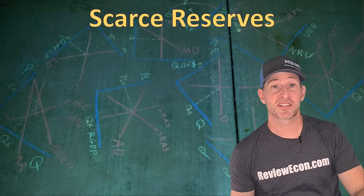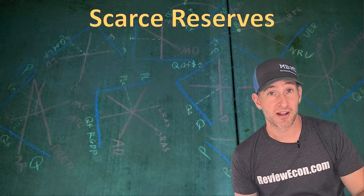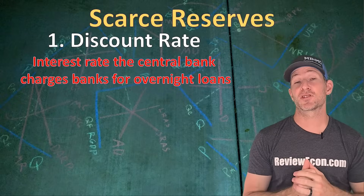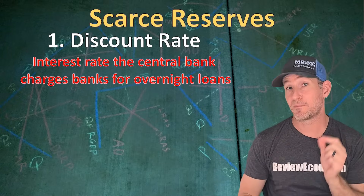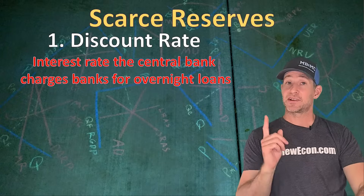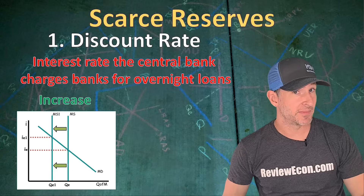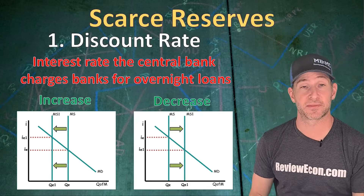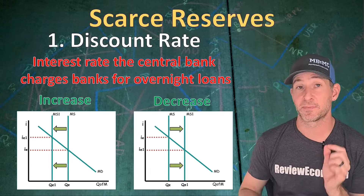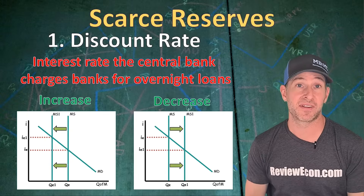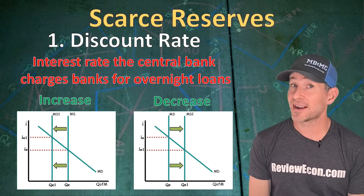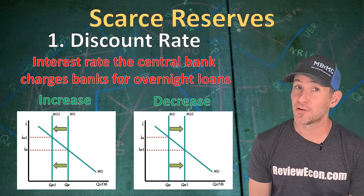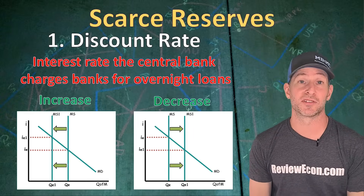Under a scarce reserve system there are three monetary policy tools. The first is the discount rate — the interest rate that the central bank charges banks for overnight loans. Increasing the discount rate decreases the money supply, and decreasing the discount rate increases the money supply, because the discount rate is the penalty for not having enough required reserves. A higher discount rate decreases the amount of loans banks make, and a lower discount rate increases loans made.